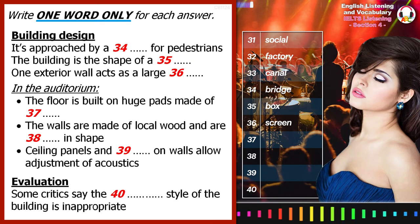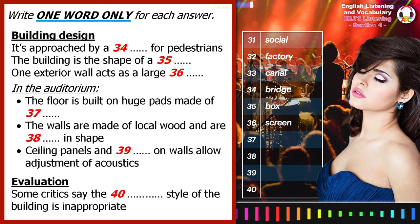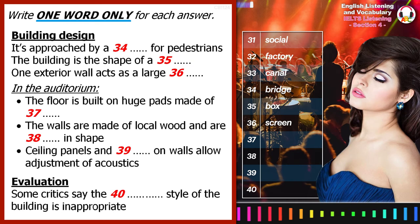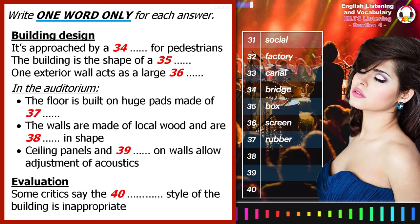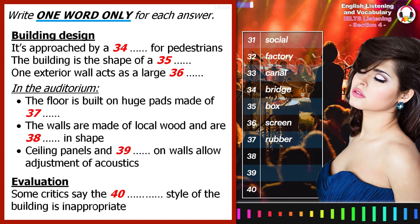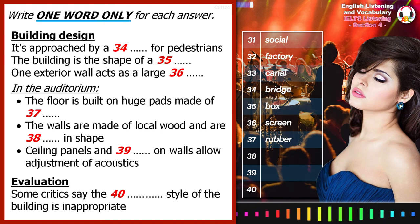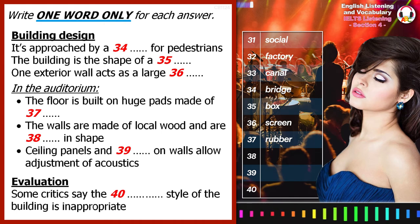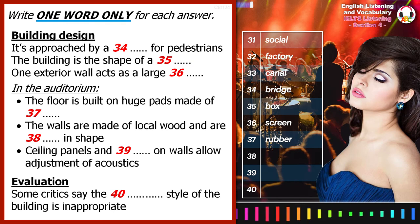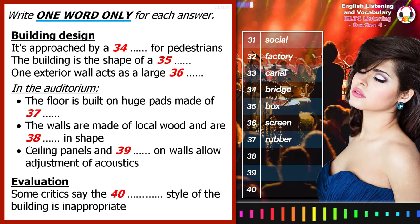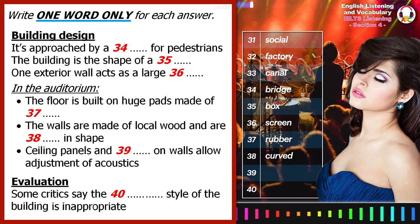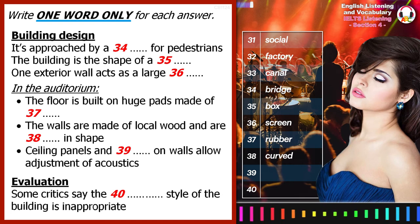The auditorium itself seats 1,500 people, the floors supported by 10 massive pads. These are constructed from rubber and so are able to absorb any vibrations from outside and prevent them from affecting the auditorium. The walls are made of several layers of honey-coloured wood, all sourced from local beech trees. In order to improve the acoustic properties and amplify the sound, they are not straight — they are curved. The acoustics are also adjustable according to the size of orchestra and the type of music being played.